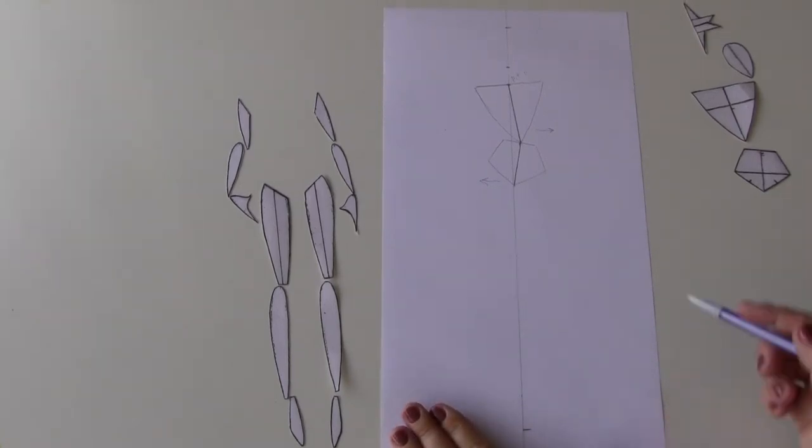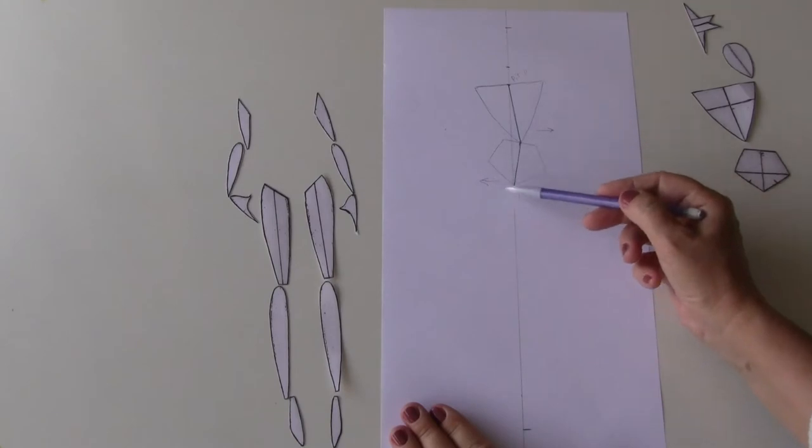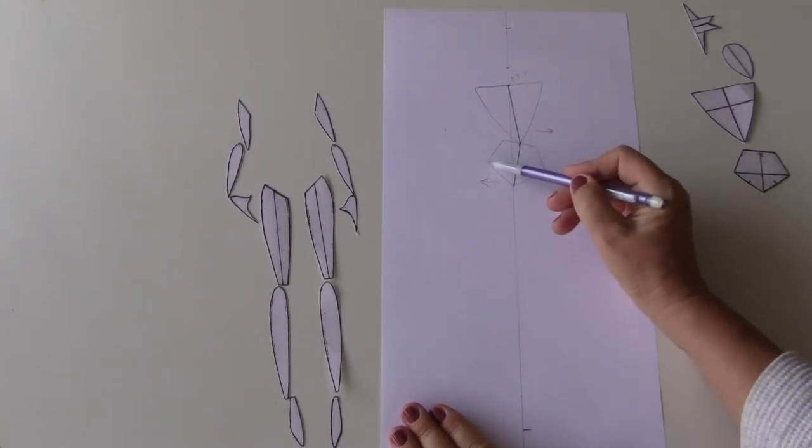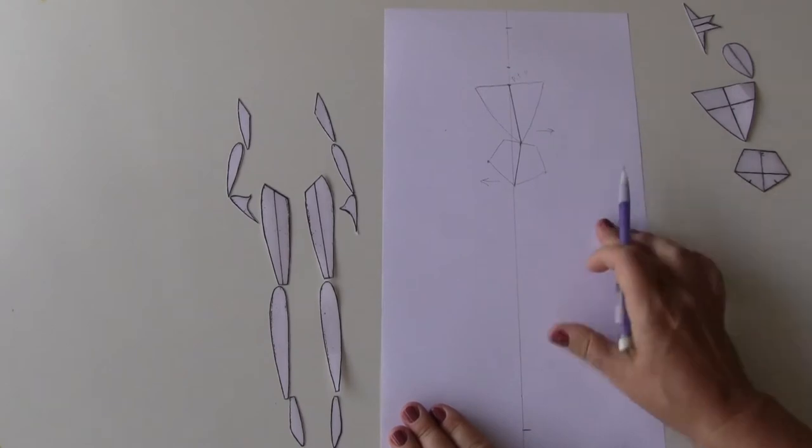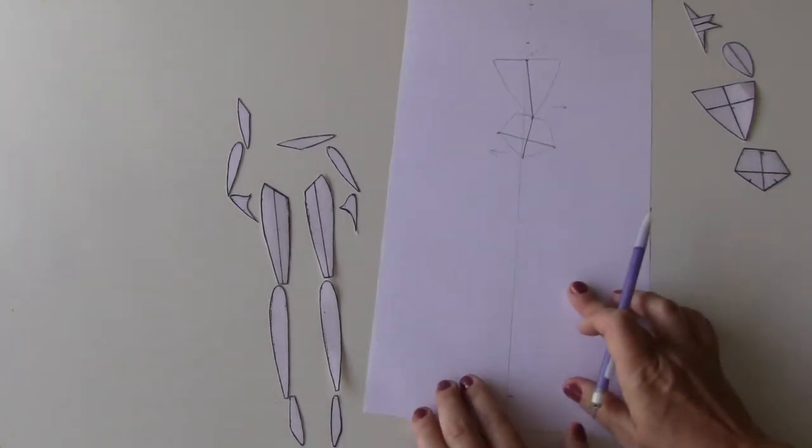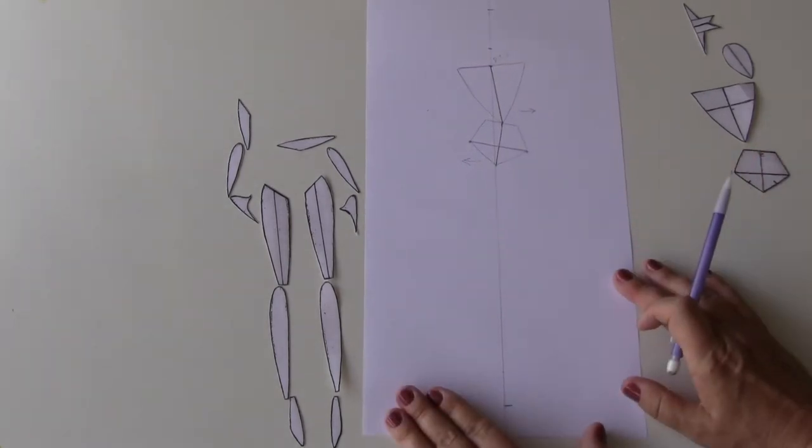Okay, to do legs, first of all we should realize where is our hip line right now. If I connect this point and this point with a straight line, this will be my hip level, hip line.